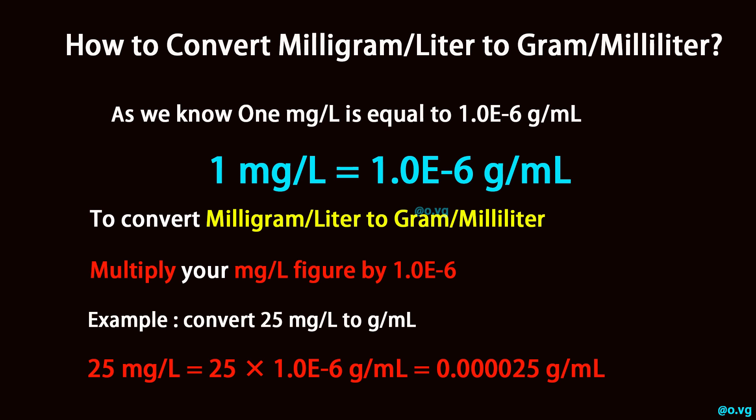To convert milligram per liter to gram per milliliter, multiply your milligram per liter figure by 1.0 times 10 to the power of negative 6.